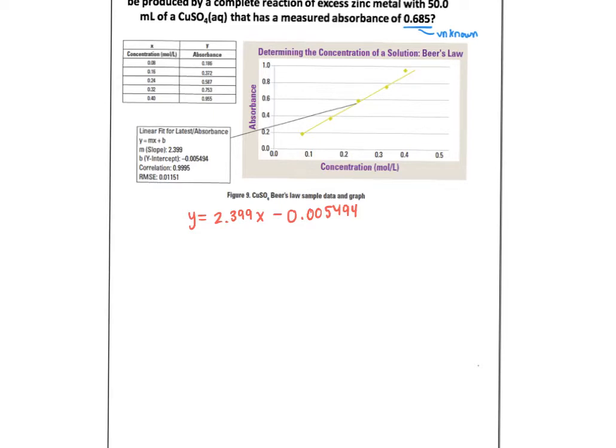The unknown was 0.685 as our absorbance. Remember absorbance doesn't have any units. 2.399X minus 0.005494. So let's get X by itself. I can add that 0.005494, divide both sides by the 2.399 and I get X equals 0.288 molar. And double check, mole per liter is molarity. You always want to make sure it's not micromolar. So that's molar of CuSO4.